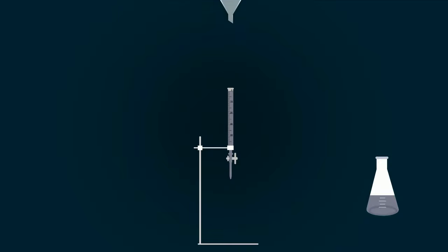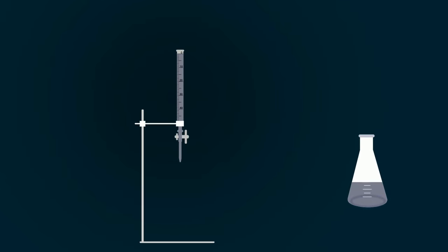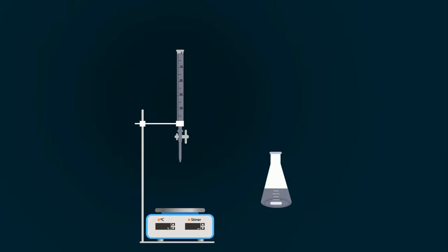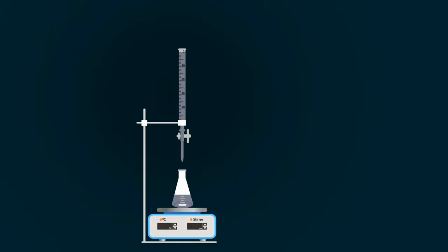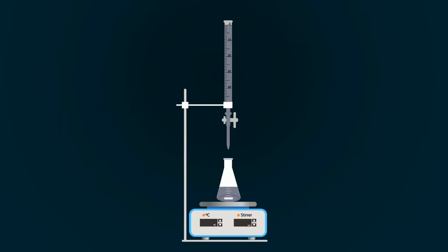Now put magnetic stirrer and add magnetic bar into the conical flask. Put this conical flask onto the magnetic stirrer. Now adjust your RPMs.